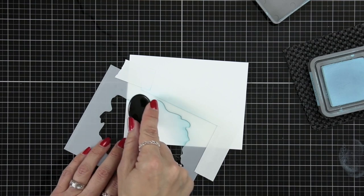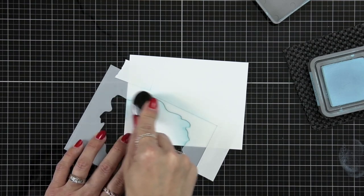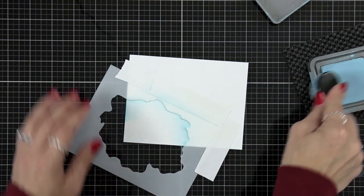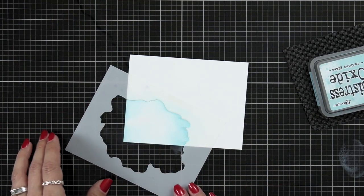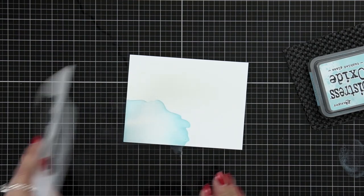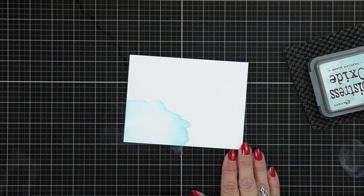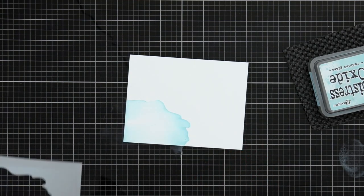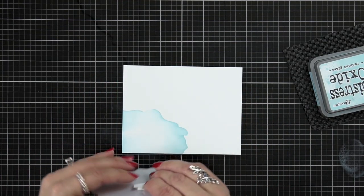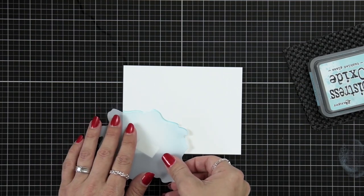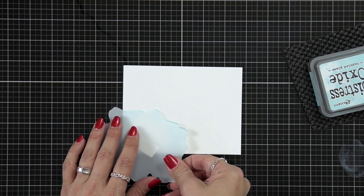A blending brush really works nice for this technique because it has those soft bristles and you have more control over it versus a sponge and it just kind of has it fade off into the center. So I will remove my stencil and here we have this really cute little body of water and now I want to create my scene. So I straightened out my cardstock because it was crooked before but I want to use the grid lines on my mat so I made sure my cardstock was straight.